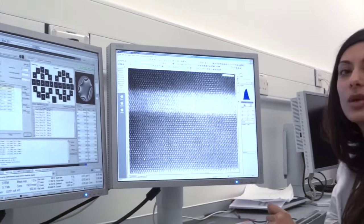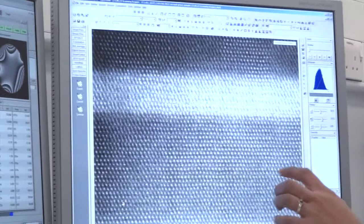If we zoom in, we're able to detect individual atomic columns, both of the gallium nitride in the barriers and the indium gallium nitride.